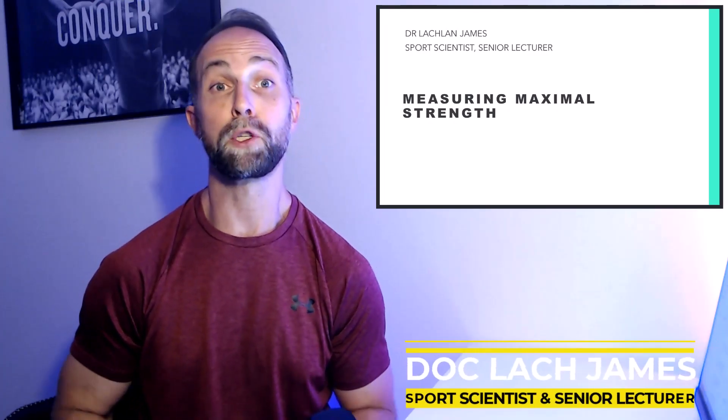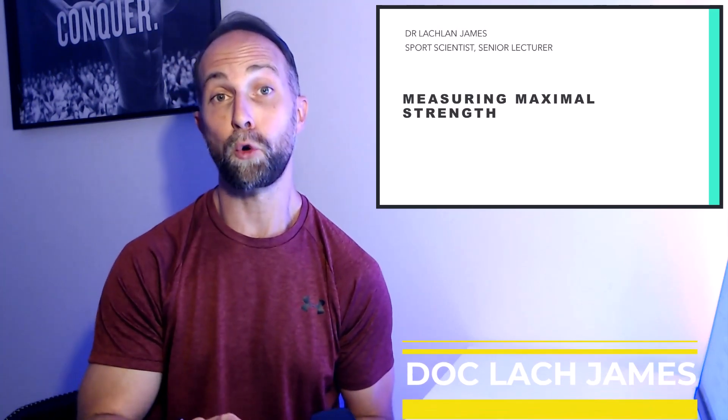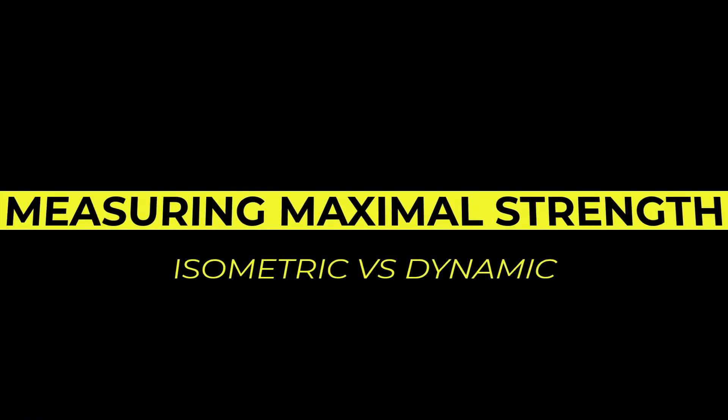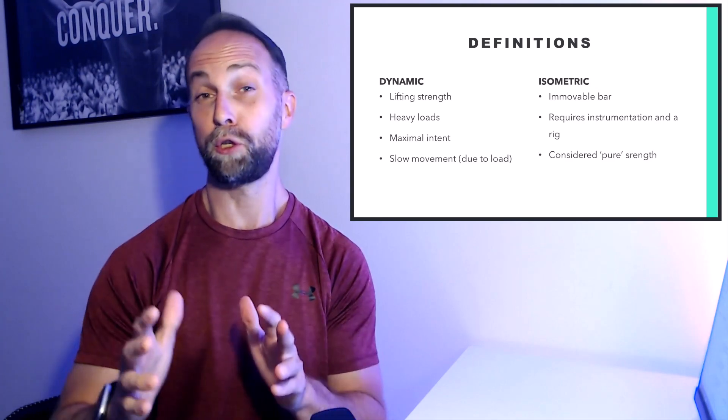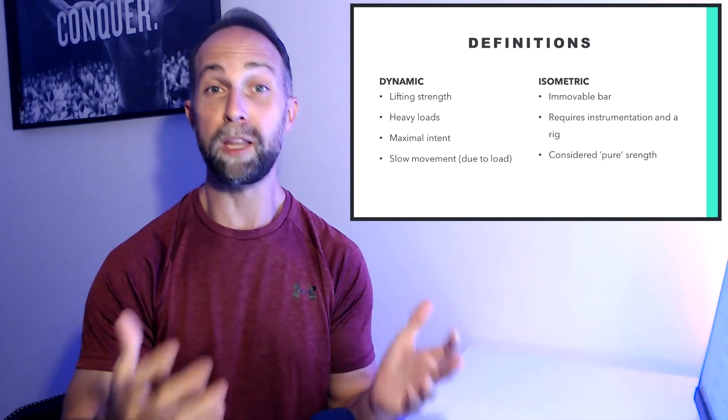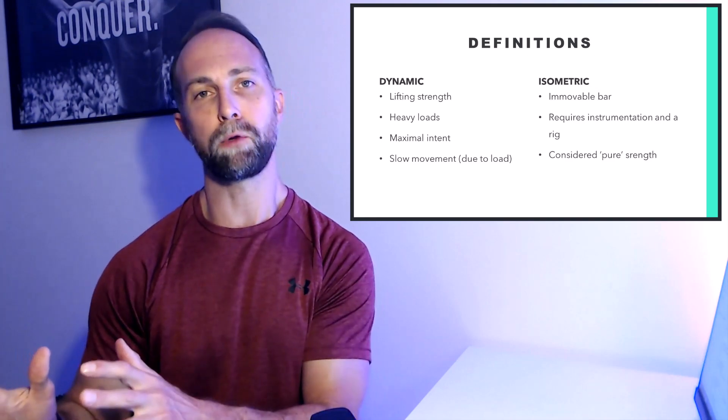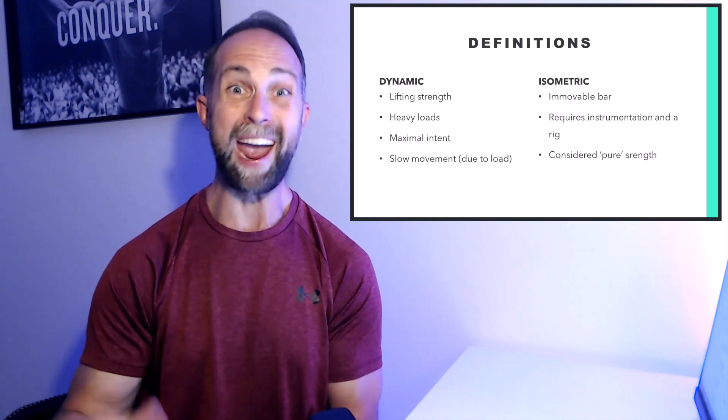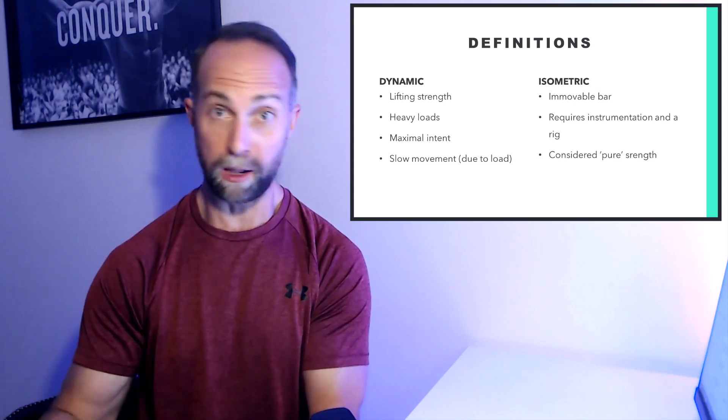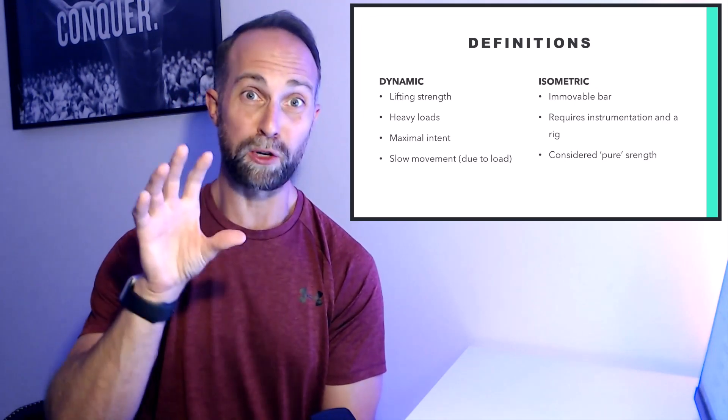Hi everybody, Doc Lock James here. I'm a sports scientist and senior lecturer at La Trobe University in Melbourne, Australia, and today we're going to be talking about how to assess your maximal strength. There's actually two types of maximal strength: maximal dynamic strength, which is your ability to move heavy objects, and maximal isometric strength, which is your ability to push or pull against an immovable object, typically assessed via a load cell, force plate, or strain gauge.